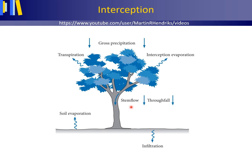The amount of precipitation per unit of time that reaches the ground surface is the net precipitation. Net precipitation is made up of the quantities of throughfall and stem flow per unit of time.